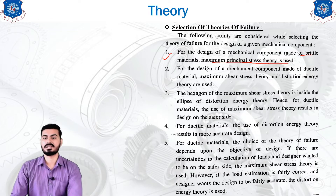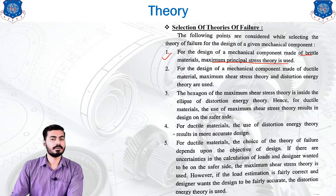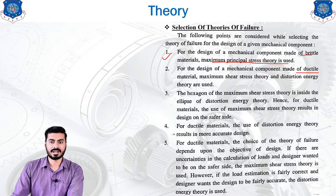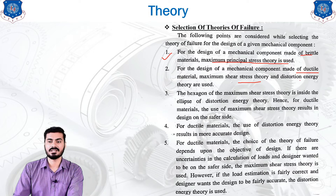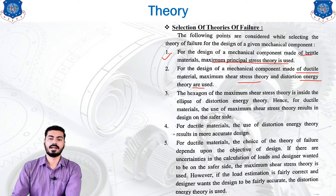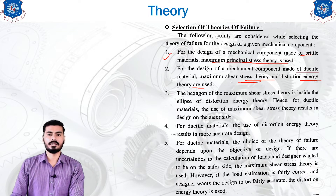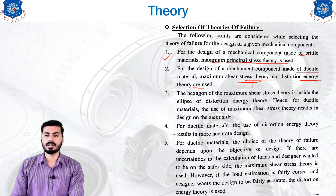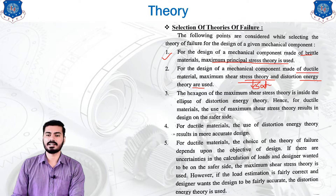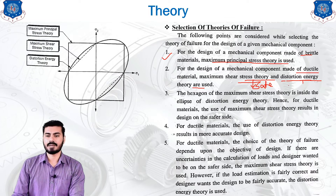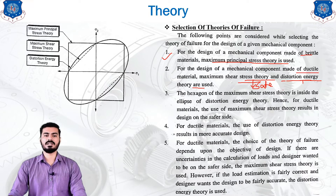For the design of a mechanical component made of ductile material, the maximum shear stress theory as well as the distortion energy theory is used. When two theories are available and you require a somewhat safer design, you will use the maximum shear stress theory. When you need an optimum design, the distortion energy theory is used.